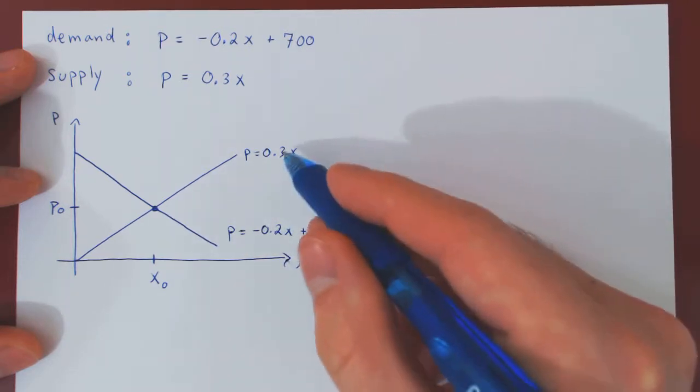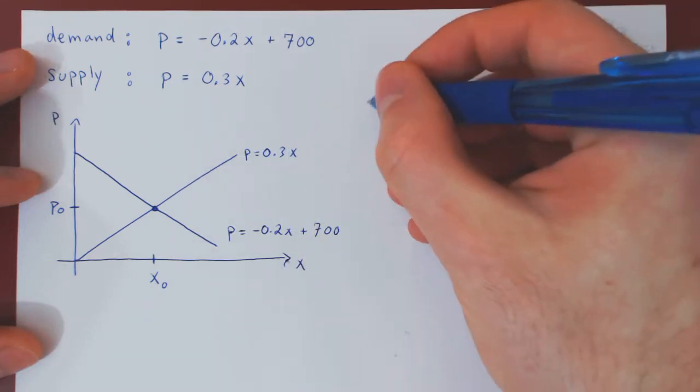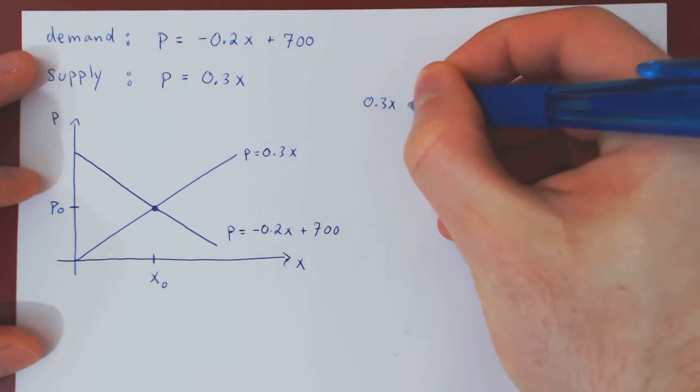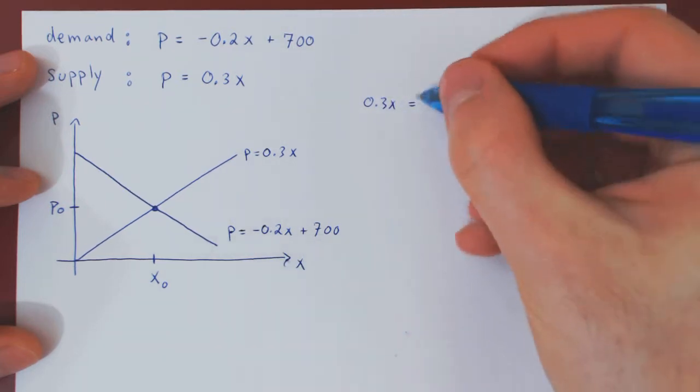We will get that 0.3x must be equal to negative 0.2x plus 700.